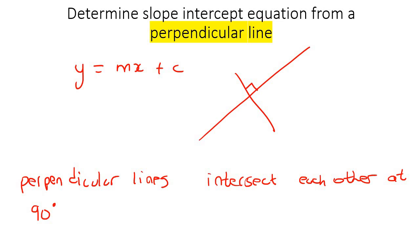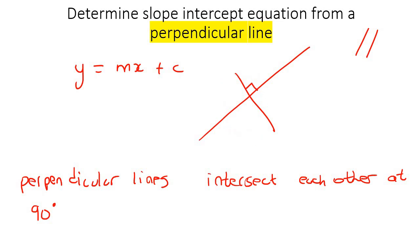In the previous lesson, when we spoke about parallel lines, we said that parallel lines look like this, and so they have the same slope. Perpendicular lines do not have the same slope. Here's line number one and here's line number two — clearly, we can see that they do not have the same slope.